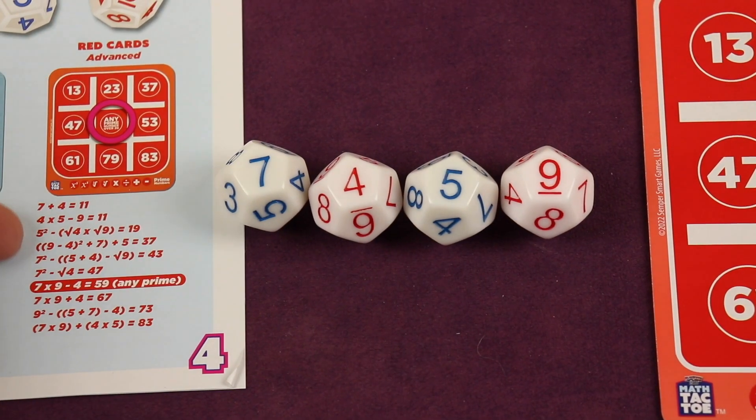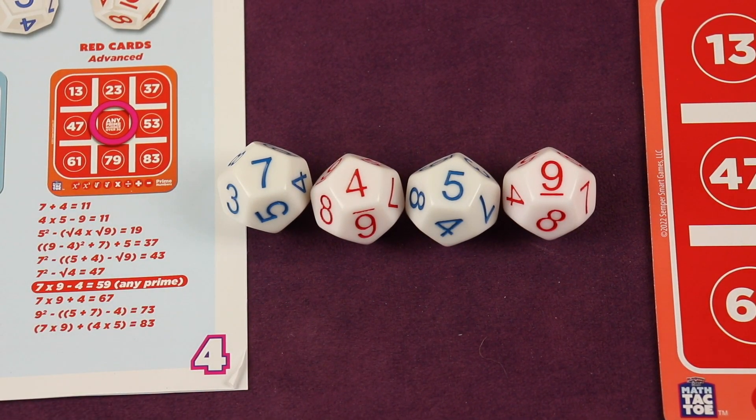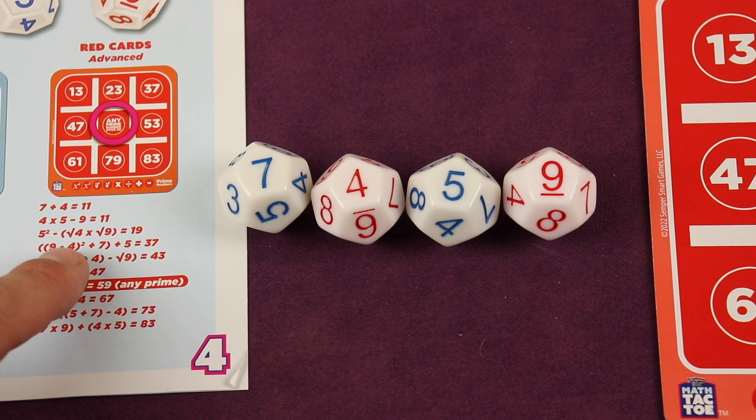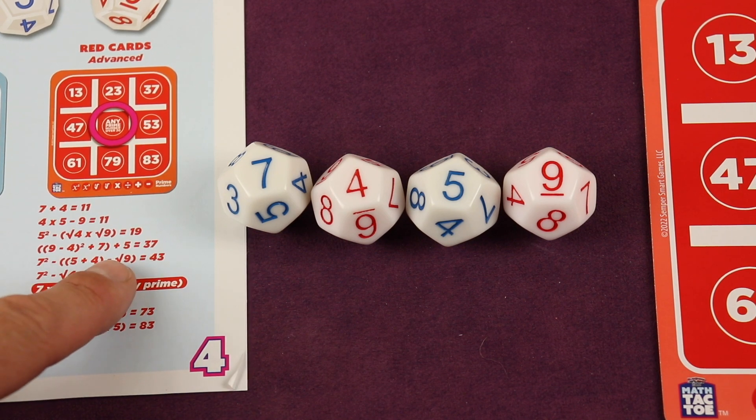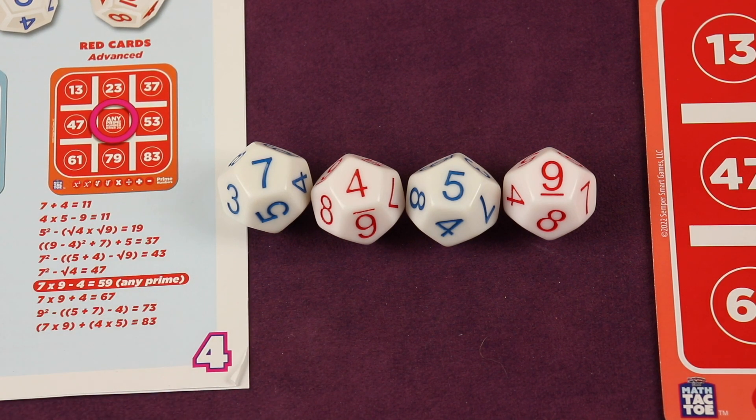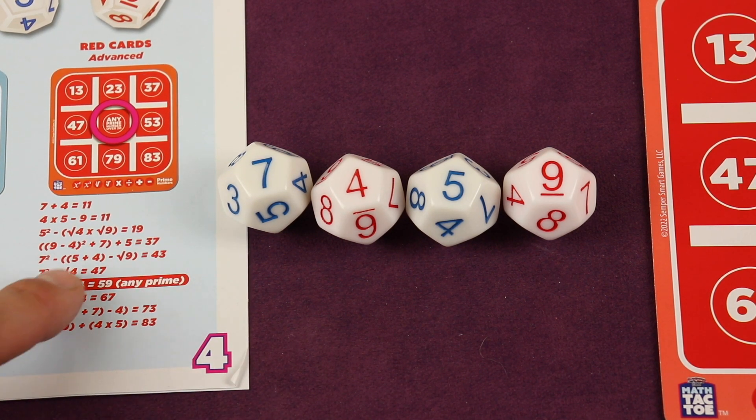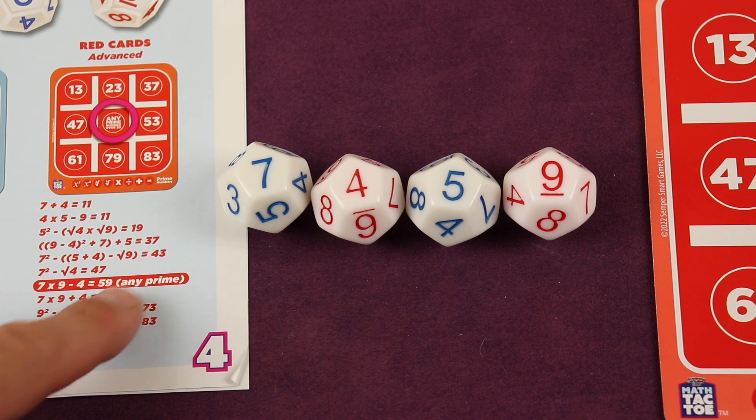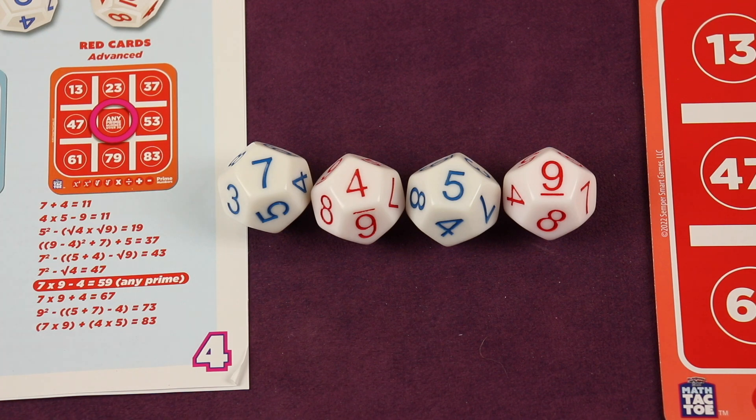The rules actually show a lot of these examples. You can have a piece of paper and pen if you want to do some of these more complicated ones. Like look at all of these here: you're going to take nine minus four, square it, add the seven, then add five to that. Or seven squared, and you're going to subtract—first of all five plus four which is nine—then subtract the square root of nine. So you have lots of flexibility. On this one you're probably going to want some paper and pencil.